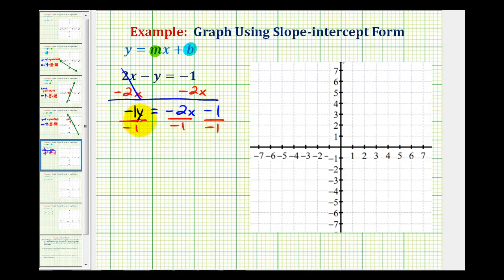So negative 1 divided by negative 1 would be 1, 1 times y is y. Here we're going to have a positive 2x, and then negative 1 divided by negative 1 is positive 1, so we'll have plus 1.